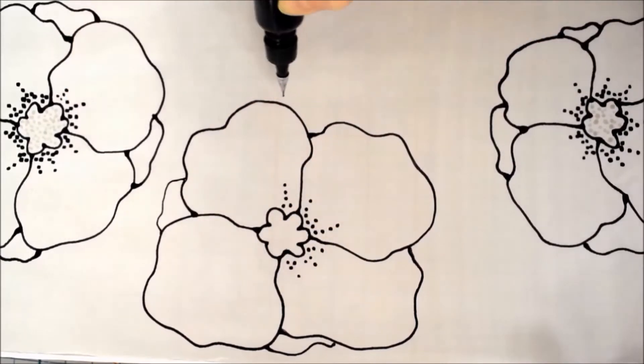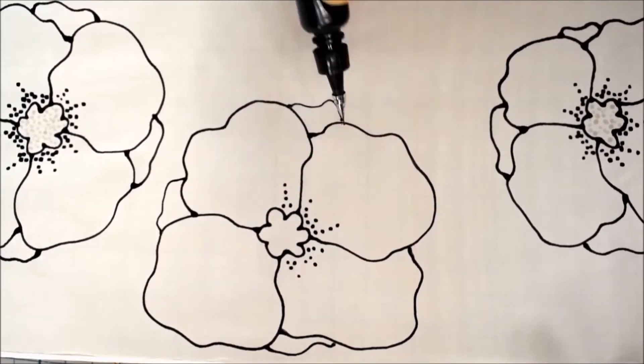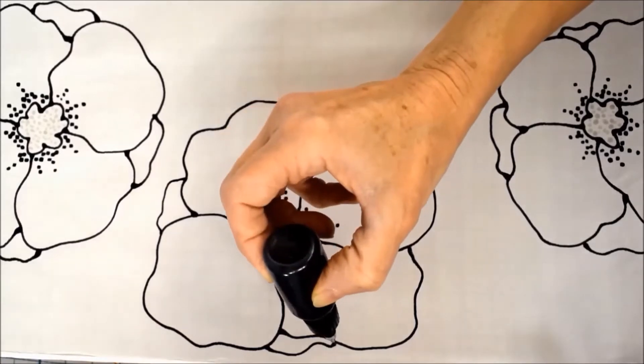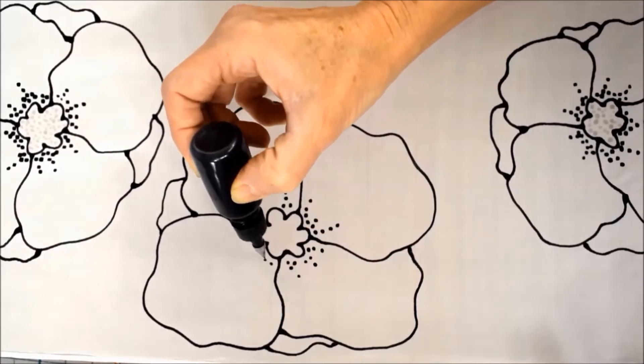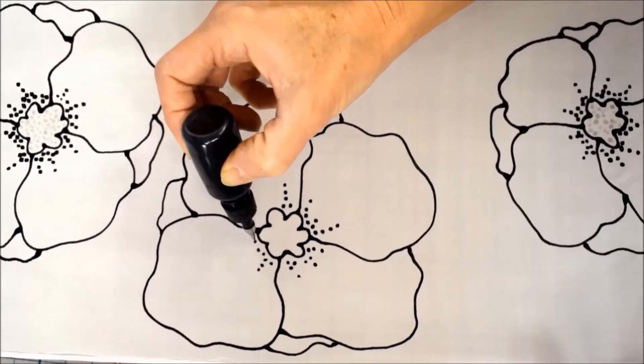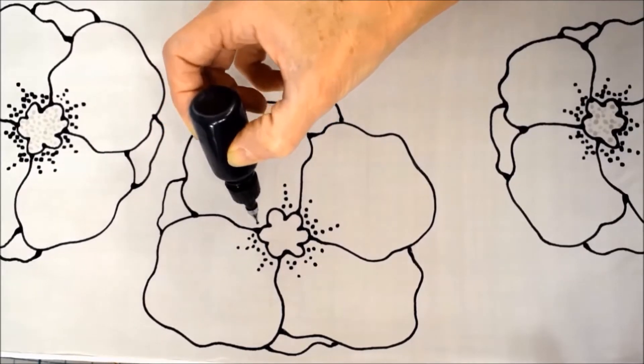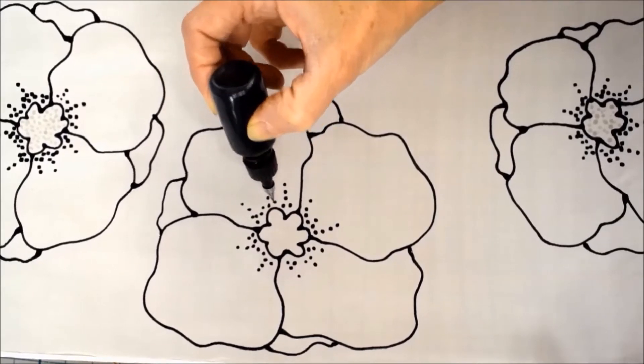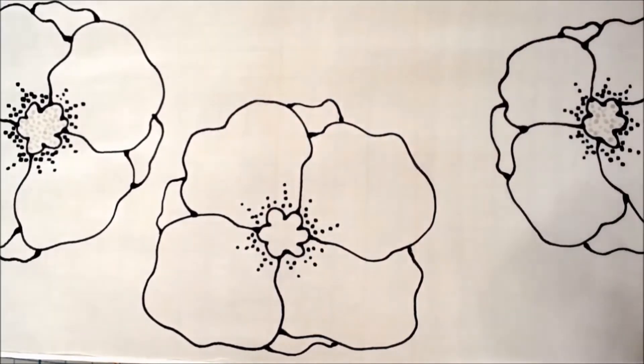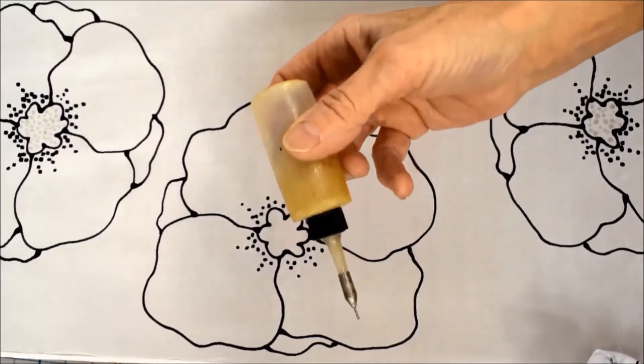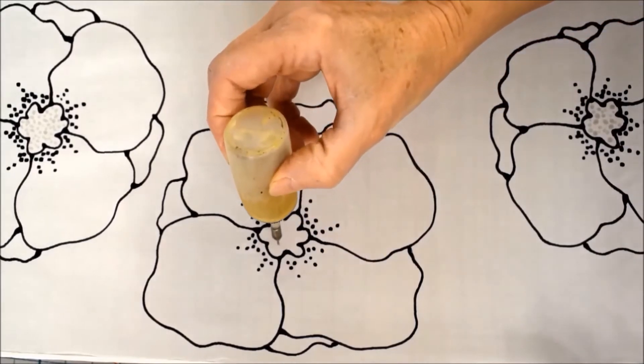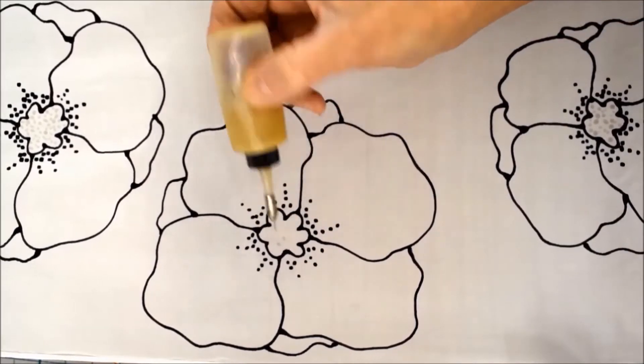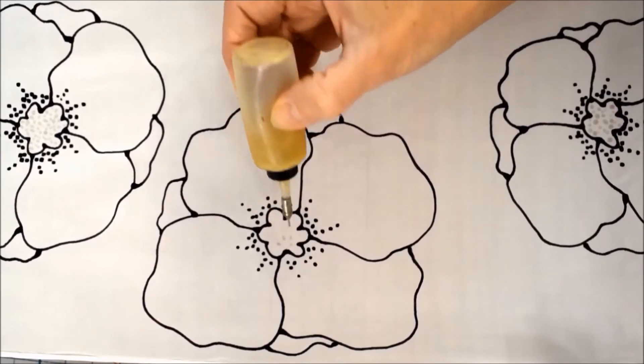This scarf has poppies drawn all up and down the scarf, and I'm going to be using a nice deep red and pink color to do the blending for the petals. And then on the center, I'm going to add a clear gutta, and because I'm going to do this part in black, I'm adding some little white dots.